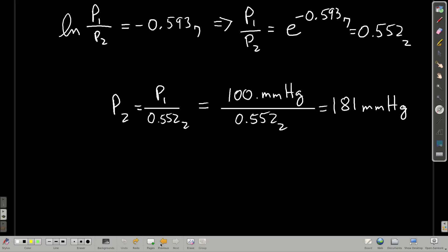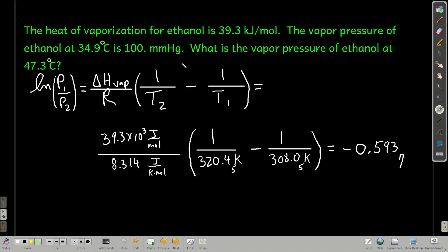And you should always check and make sure it makes sense, right? Because we know that vapor pressure increases with temperature. Because T2 is bigger than T1, we should get P2 bigger than P1, and it was.